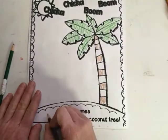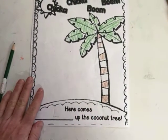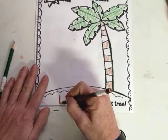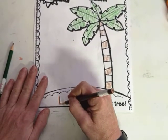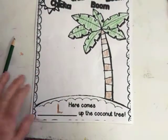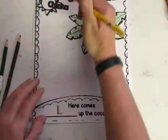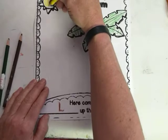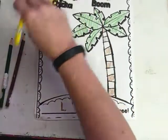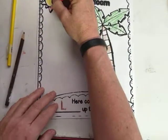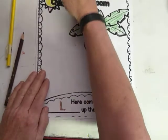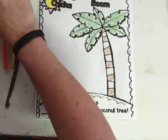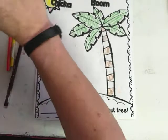Here comes L, up the coconut tree. We are going to work on the letter L today. So let me finish giving our little coconut tree some color, kind of like this coconut tree here. It's kind of gotten to be my thing for starting out each new letter.